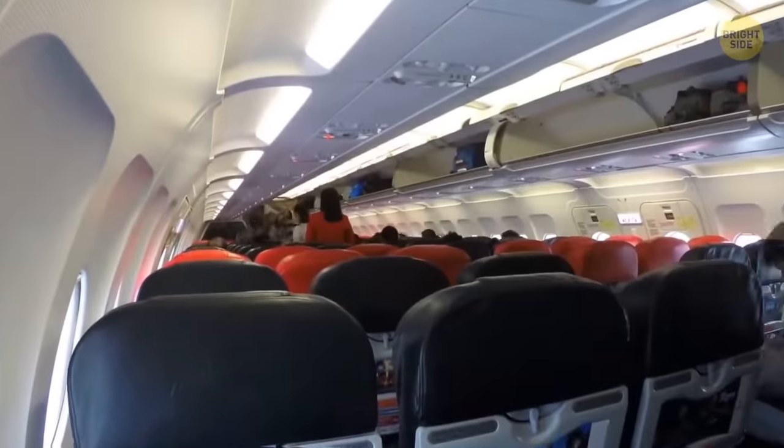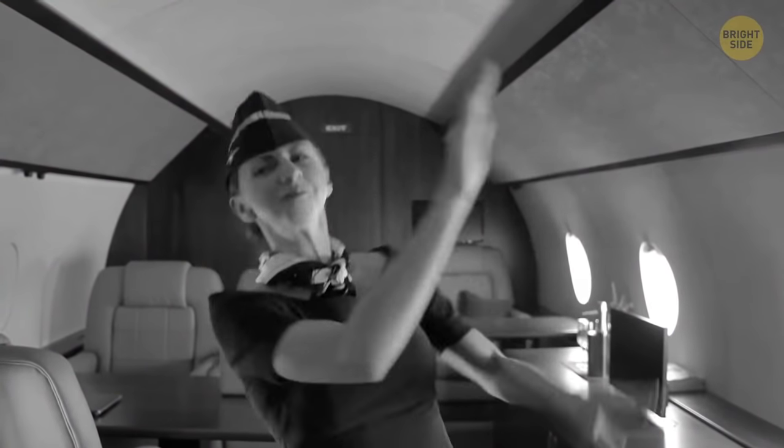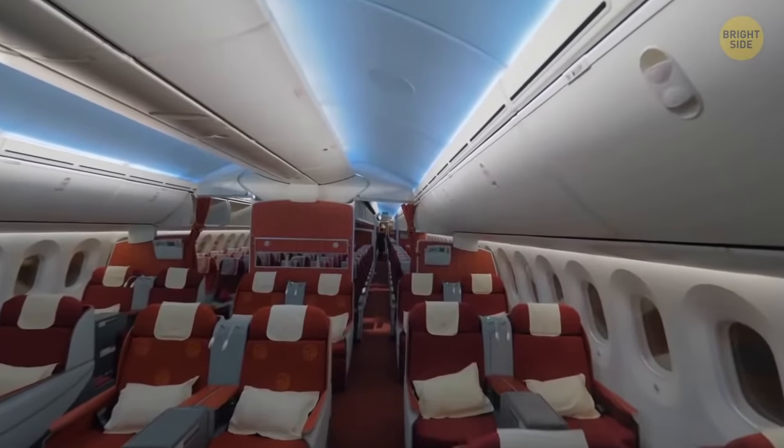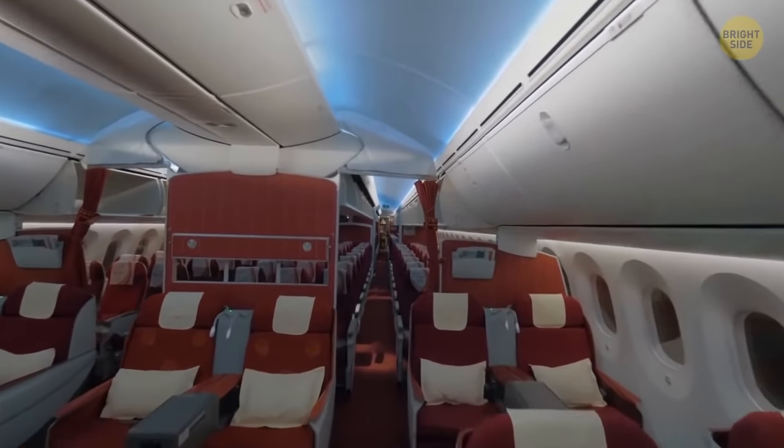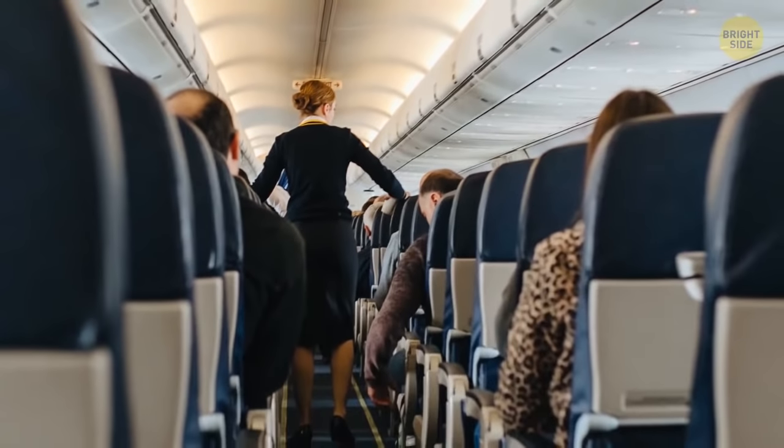You may have noticed that members of the flight crew like to touch the overhead compartments while they're walking down the aisle. They don't have a weird desire to touch everything. There are actually handles along the edges to give them a better grip while walking. Go ahead and use them the next time you feel like a mid-air stroll. It's definitely better than grabbing onto everyone's headrests. Don't you hate that?